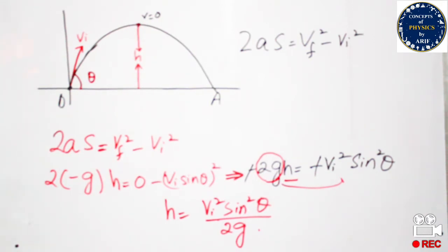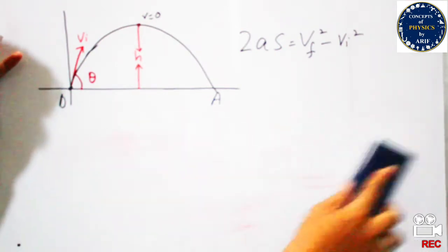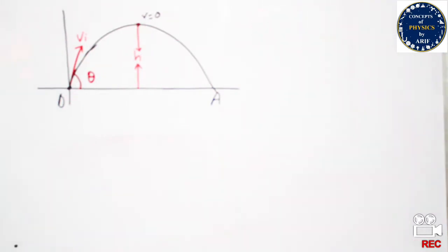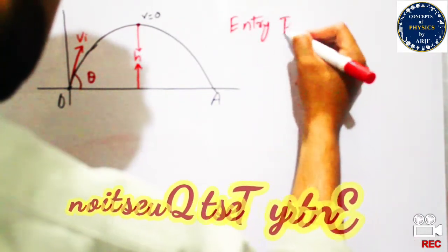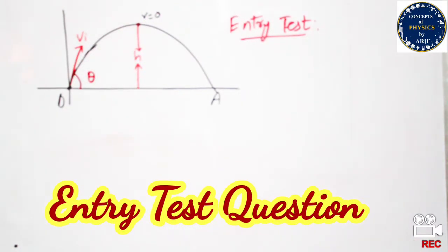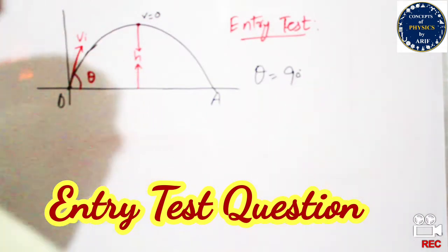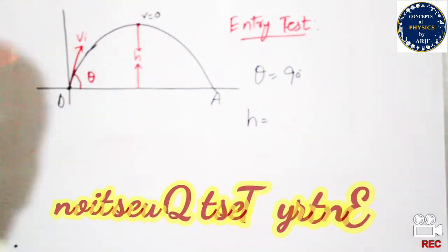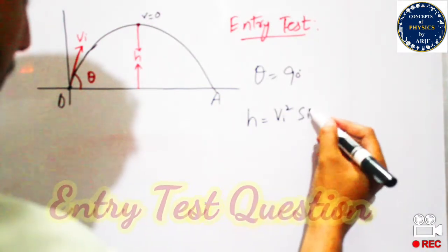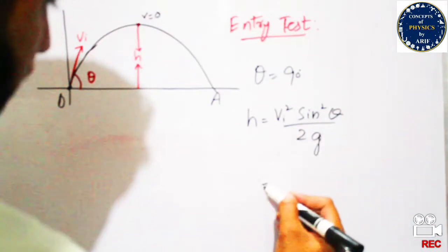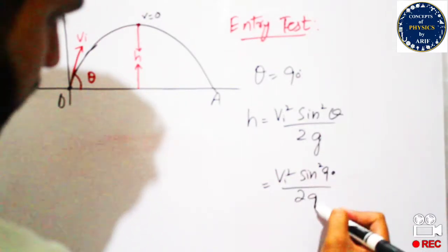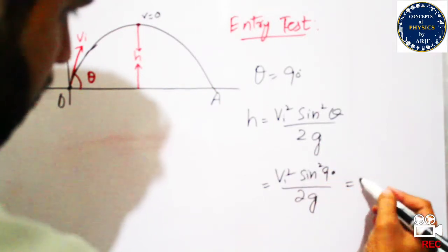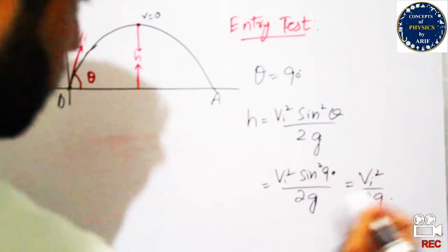If we want to find the maximum height of projectile motion — if we are asked at what angle the height is maximum — at theta = 90 degrees, the height of projectile will be H = Vi² sin²(90°) / 2g. Since sin(90°) = 1, this gives H = Vi² / 2g. So at this angle, the height of projectile will be maximum.